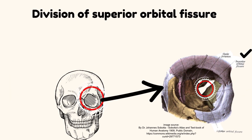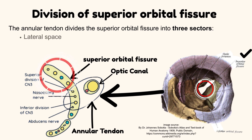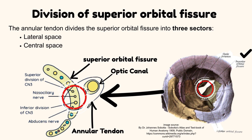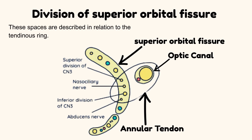Division of the superior orbital fissure by the annular tendon. The annular tendon divides the superior orbital fissure into three sectors: the lateral space, the central space, and the inferior space. These spaces are described in relation to the tendinous ring.